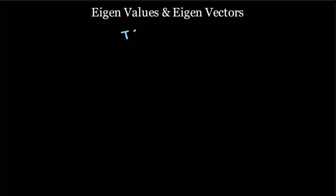So basically what we understand now is that when a transformation is applied on an eigenvector V, all that happens is that the vector scales in magnitude by lambda, where lambda is the eigenvalue of that particular vector.